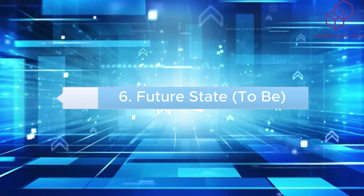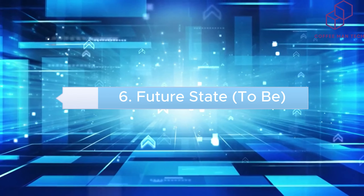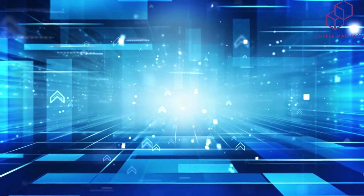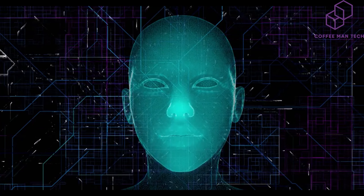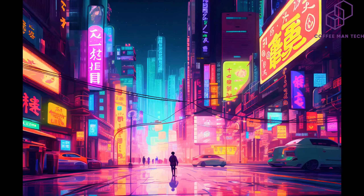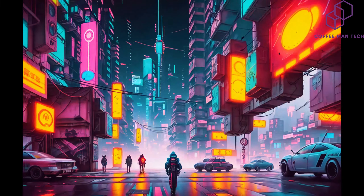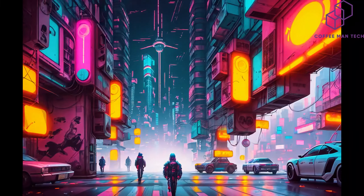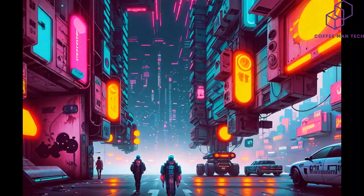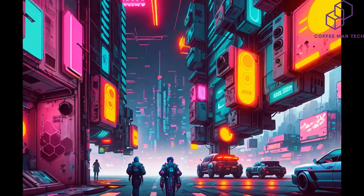The sixth step is defining the future state of the organization — predicting the future state of services, systems, databases, networks, and the digital world of the organization in general.